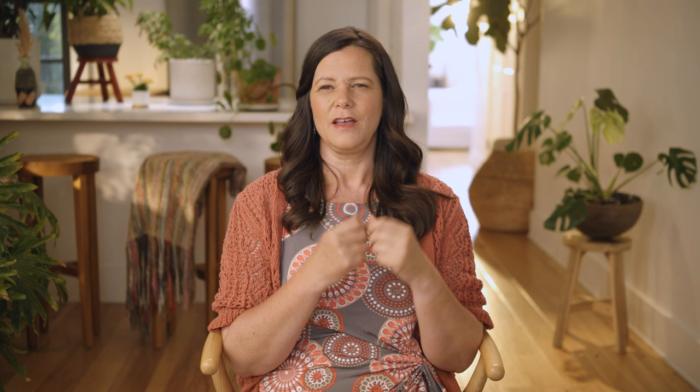I've been on some soil environments where people have had seven inches of thatch. That becomes a huge problem because roots won't penetrate through, you're not going to get nutrient access, and you're going to see water repellency in these circumstances as well. If you look at the images here, this is from Randy Booker's place at Otter Creek — when they began their journey they had just under two inches of thatch building up under the soil in 2009.